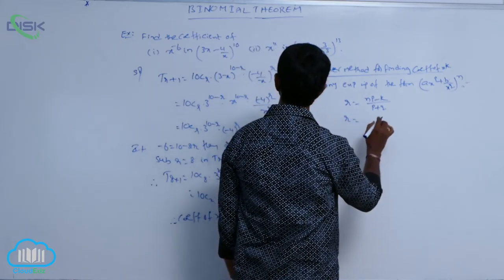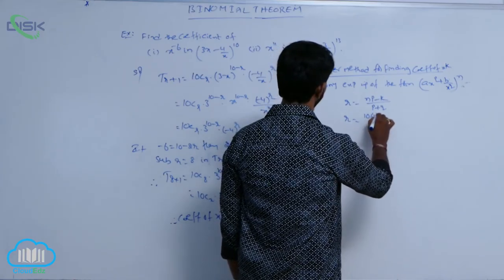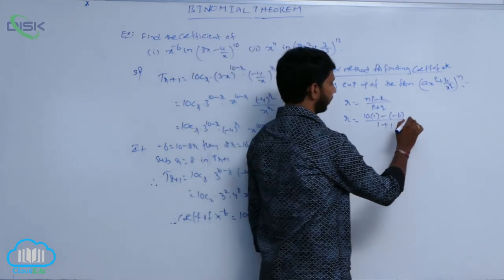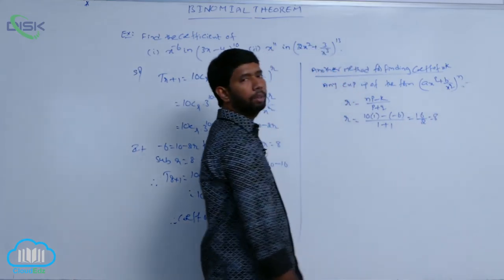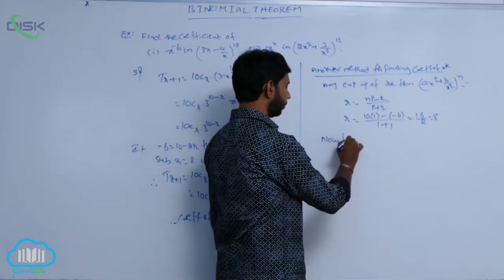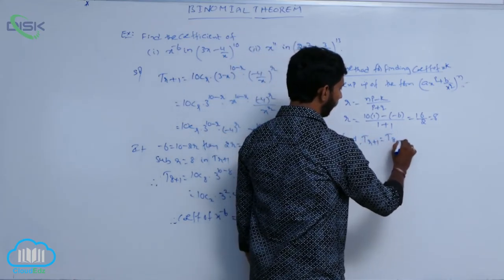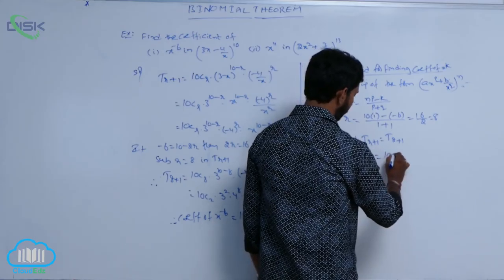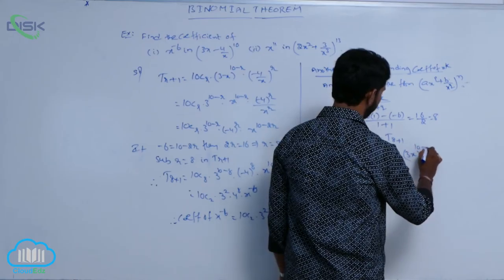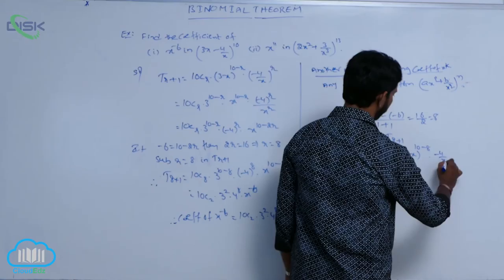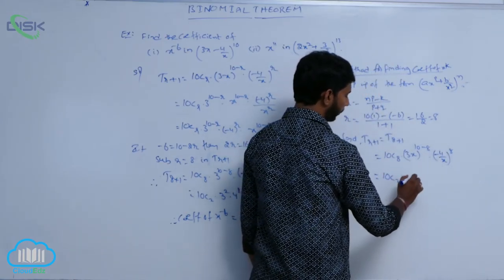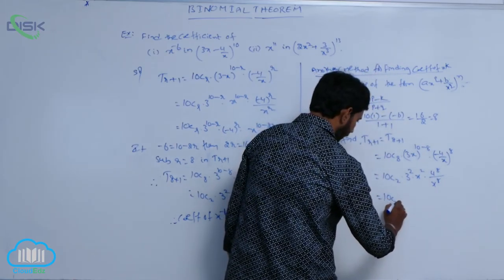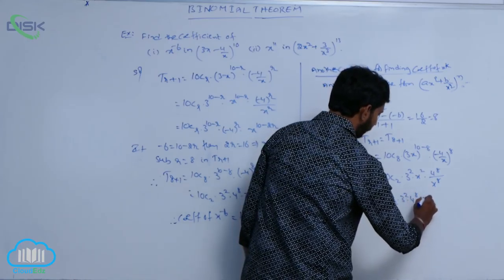Here n = 10, p = 1, k = minus 6, q = 1. So r = (10 times 1 minus (minus 6)) divided by (1 plus 1) = (10 plus 6) by 2 = 8. Now find T(r+1) = T(8+1) = 10C8 into (3x) whole power (10 minus 8) into (4/x) whole power 8, which equals 10C2 into 3 squared into x squared into 4 power 8 by x power 8, giving 10C2 into 3 squared into 4 power 8 into x power minus 6.